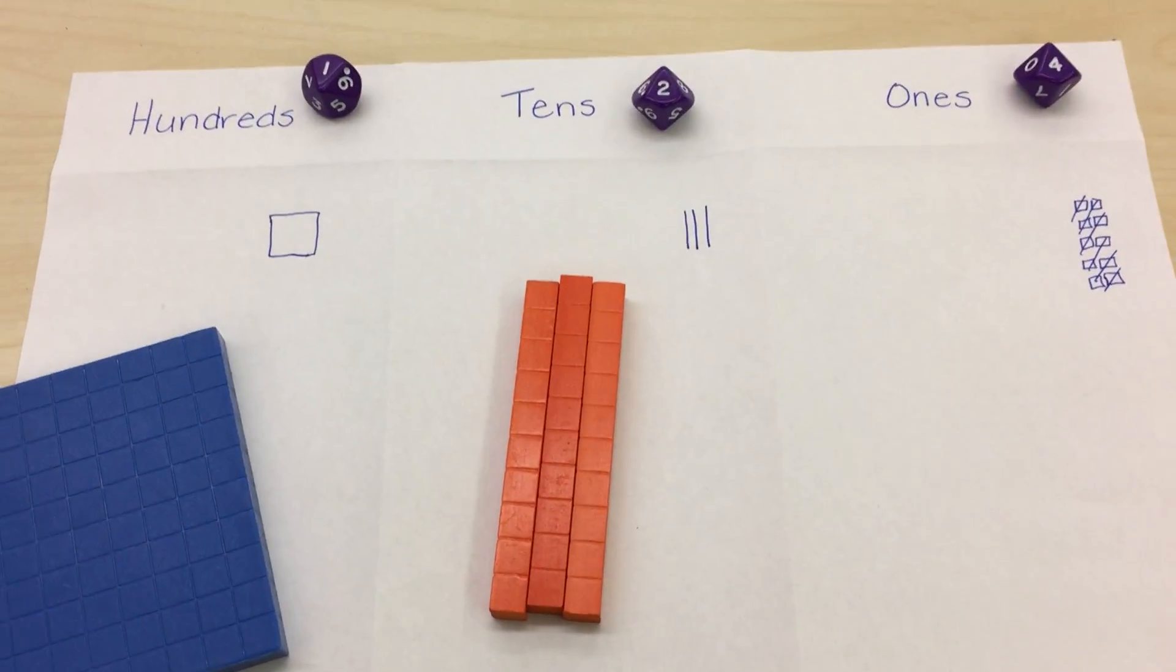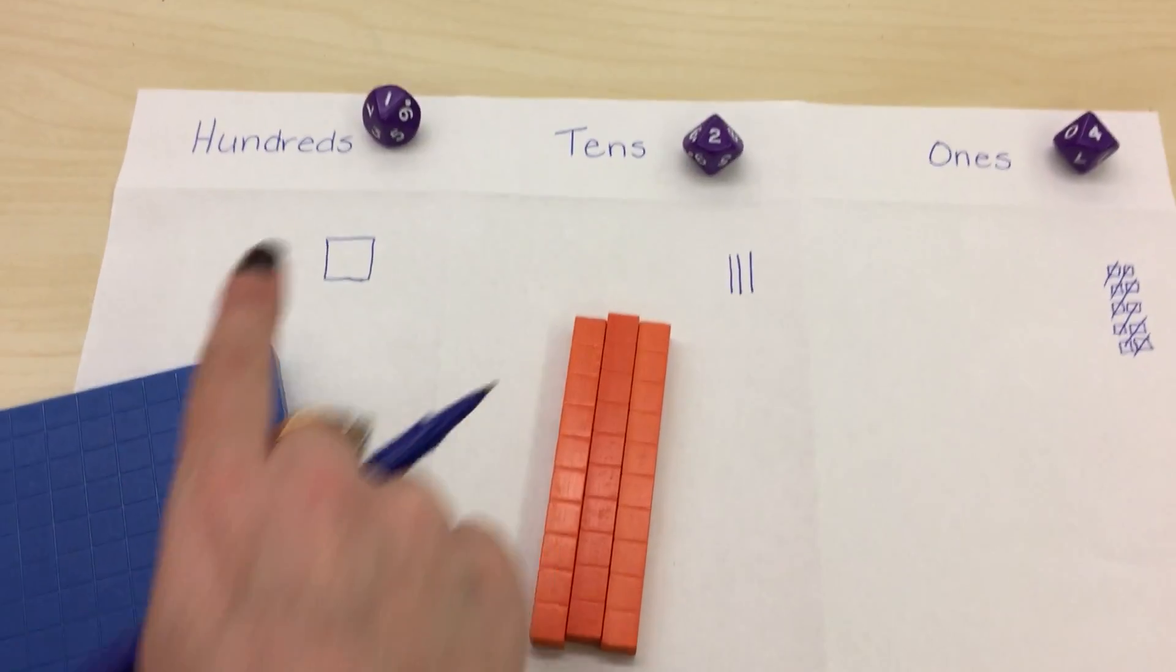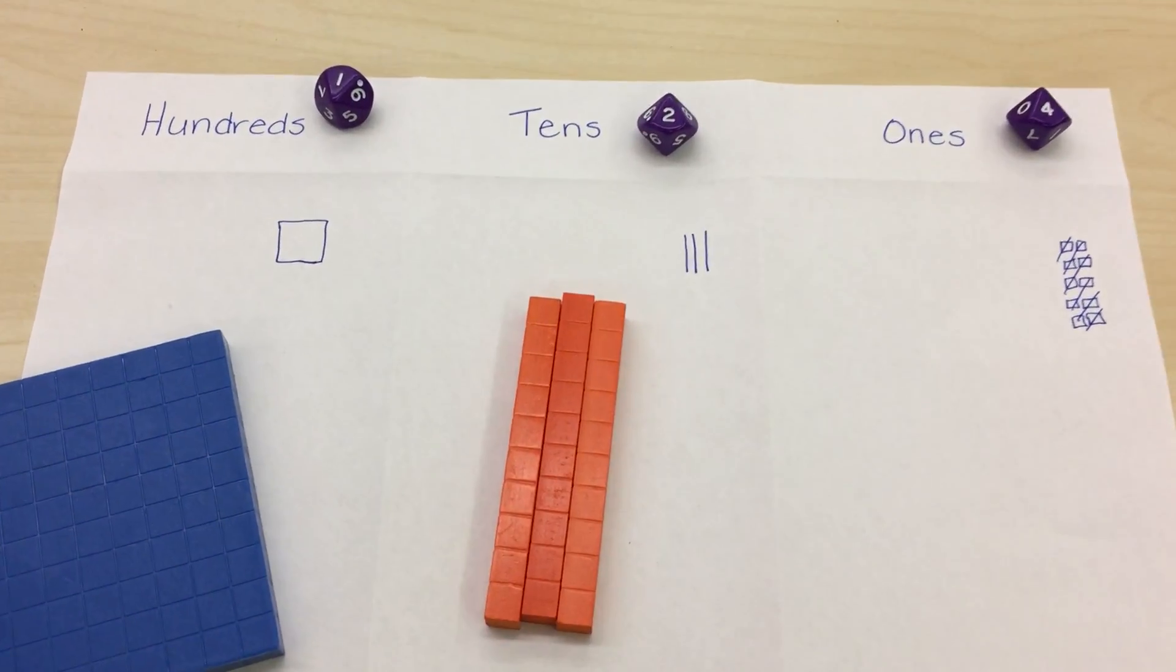So if I added five to one hundred twenty-five, I now have one hundred thirty.